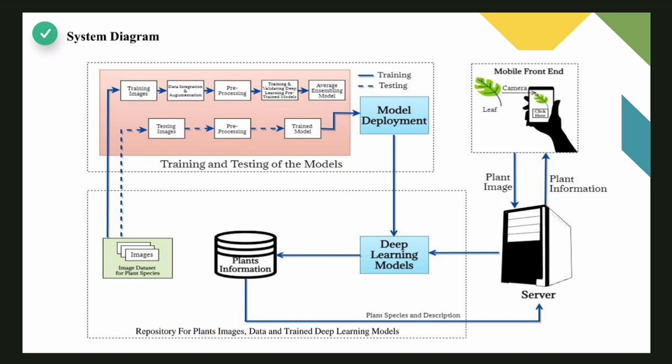A person or user captures a leaf or leaves using a mobile camera and the corresponding plant image is sent to the server as input. The plant image from the server and the deployed model are fed into the deep learning models, which creates a plant information database containing the plant species name and description, which is then sent back to the server and in turn sends the plant species name to the user. As a result, the user can now know any plant's name simply by taking a snap of it.